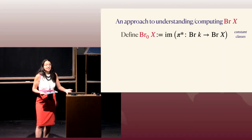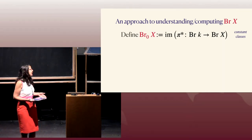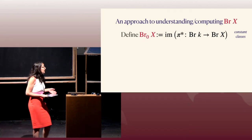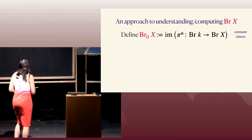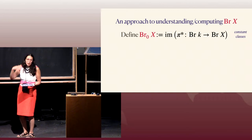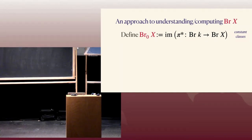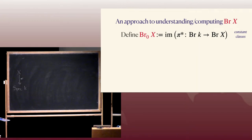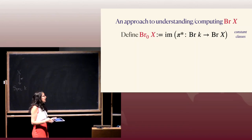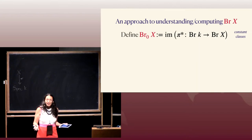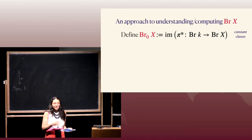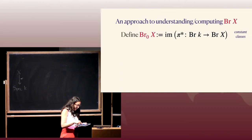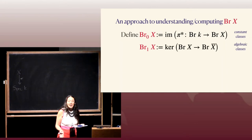The way we often begin computing the Brauer group is by subdividing it into different filtrations. Br⁰(X) typically denotes the image of the pullbacks from the Brauer group of K to the Brauer group of X. X lives over K, so we have a structure morphism from X to Spec K, giving a map in the other direction. These classes come from K, not from X — they're not telling you anything about the geometry of X. They're sort of there and you have to deal with them, but they're not really important.